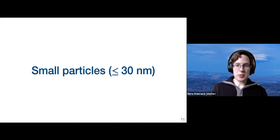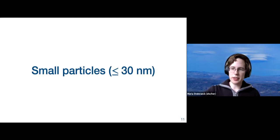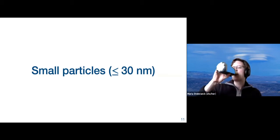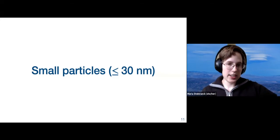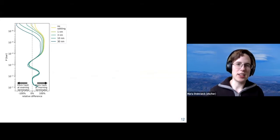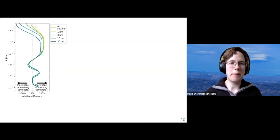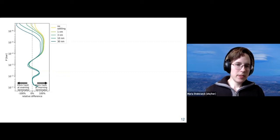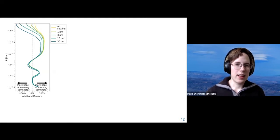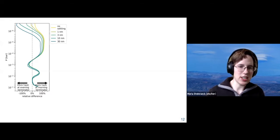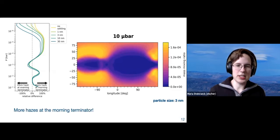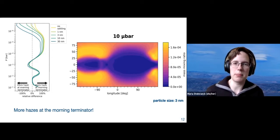Moving on to the results: I found that there are two different regimes—small particles, smaller than 30 nanometers, and large particles. For small particles, their distribution is relatively similar between different particle sizes because gravitational settling plays a relatively small role. Looking at the profile of the haze difference between the morning and the evening terminator, it looks quite similar across different small particle sizes. The interesting point is we have more hazes at the morning terminator than at the evening terminator, which is the opposite of what the Kempton et al. paper predicted.